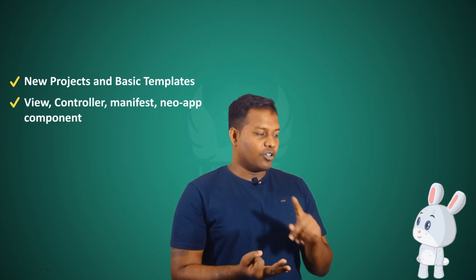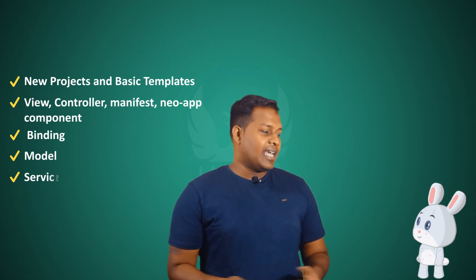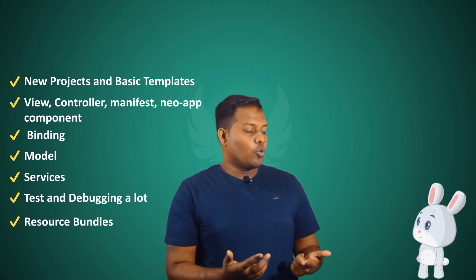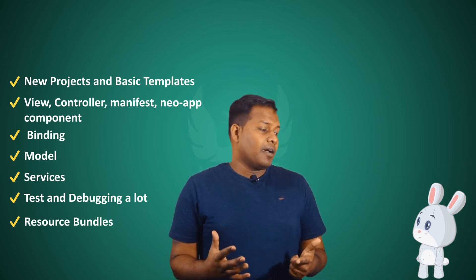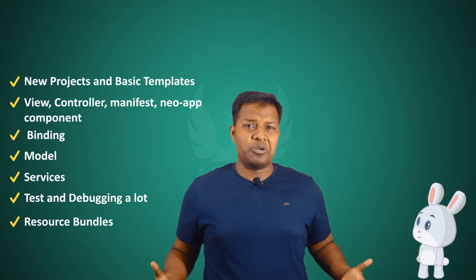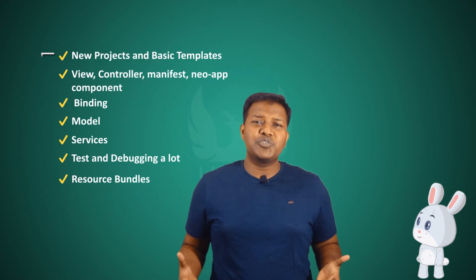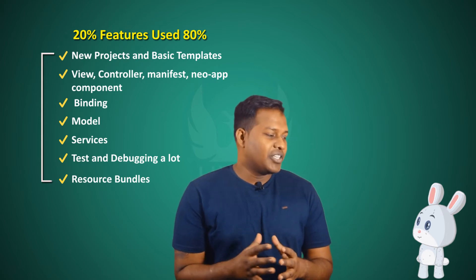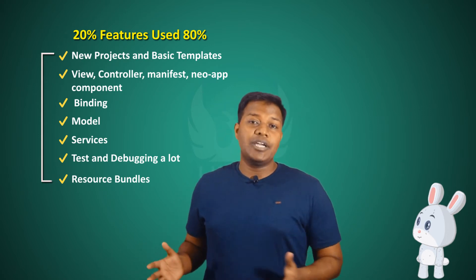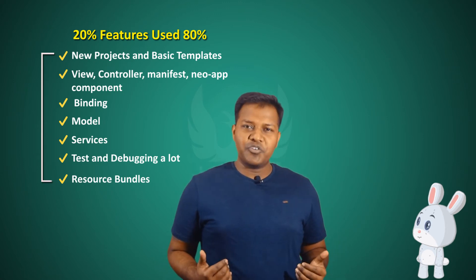You want to start new projects, work on views, data binding, model services, and extensions. You also want to understand how to test applications for responsiveness and do a lot of debugging. These are the 20% of features that Rabbit, myself, and most developers using WebID will use 80% of the time.